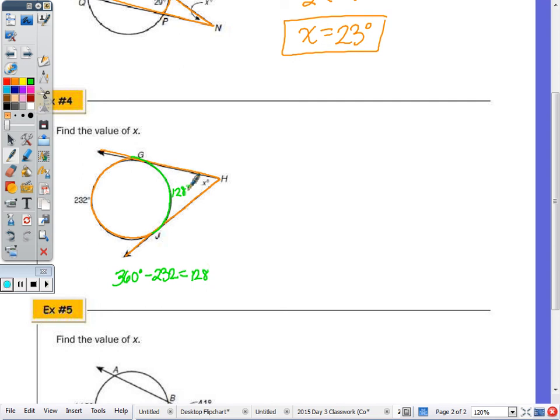Now I can take half the difference. X is equal to one half the difference of 232 and 128. That difference is 104, so X is equal to 52 degrees.